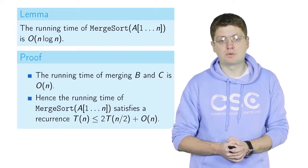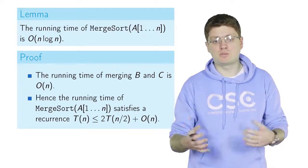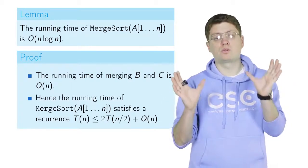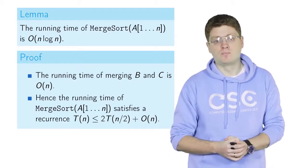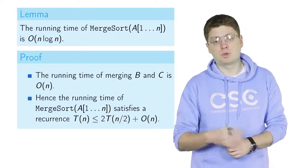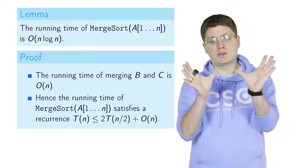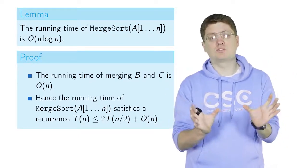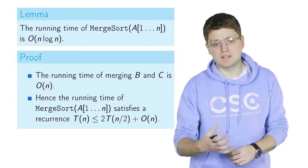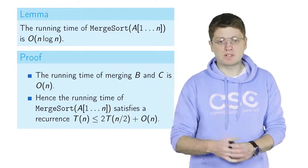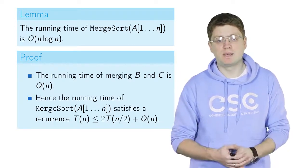The O(N) term accounts for what we do before and after the recursive calls: splitting the input array into two halves, and merging the results into one array of size N. Both steps take linear time. From this recurrence we will show on the next slide that the running time is bounded above by N log N.